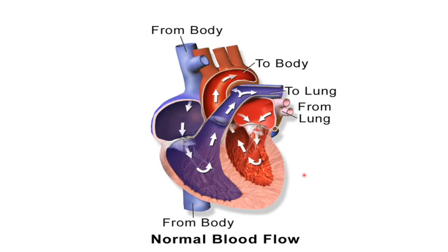Systolic or diastolic heart failure can affect the left side of the heart or the right side of the heart — that is another way of dividing heart failure, into left-sided or right-sided heart failure. One important thing to remember is that the heart chambers work together. If, for example, the left ventricle cannot pump enough blood, then the right side of the heart will not receive enough blood. So left-sided heart failure will often lead to right-sided heart failure and vice versa.